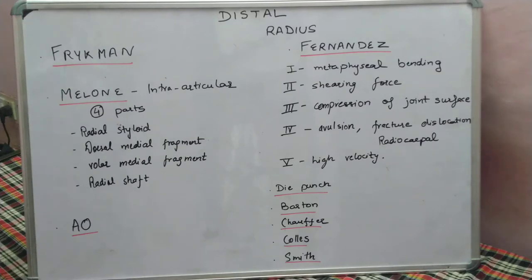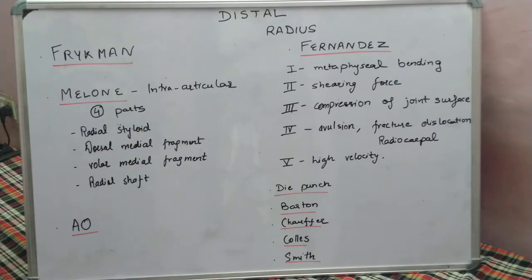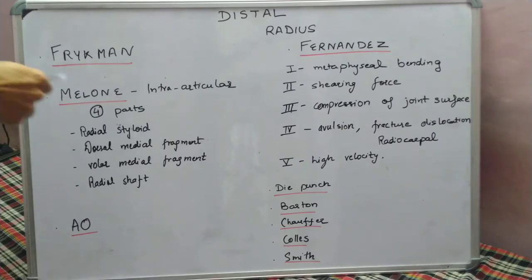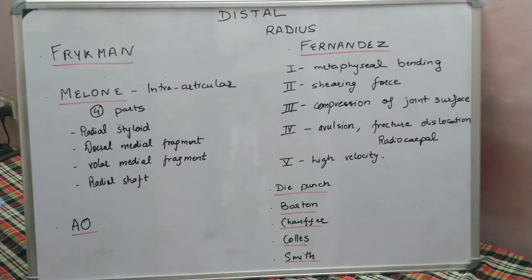In this video we will study the various classification systems for distal radius fractures. We have various named classifications and the AO classification. We will discuss them one by one, starting with the Frykman classification, which defines extra-articular and intra-articular fractures, then the Meloni classification specifically for intra-articular fractures, then the AO classification for both, and the Fernandes classification based on mechanism of injury.